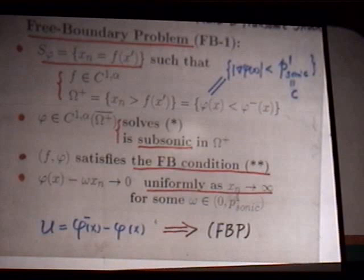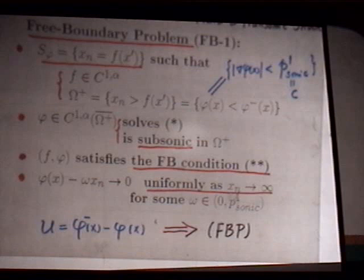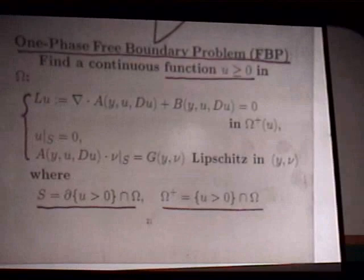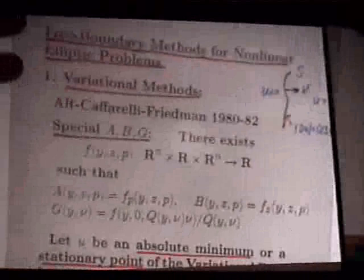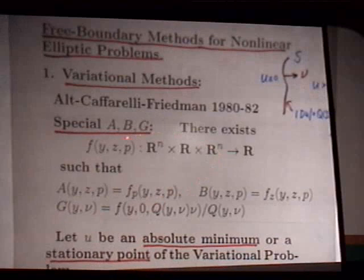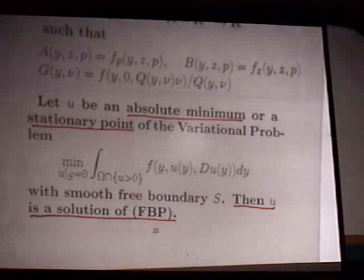For such free boundary value problems, there are various methods. One method is the variational method: one looks for some special functional ABG such that solutions are absolutely minimal or stationary points of a variational problem with moving boundary. This variational approach works well for elliptic equations — essentially all four elliptic free boundary problems. If the equation fits into a variational structure, one can prove existence of a free boundary solution.